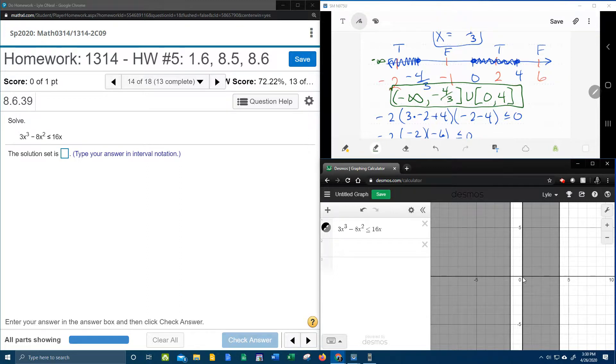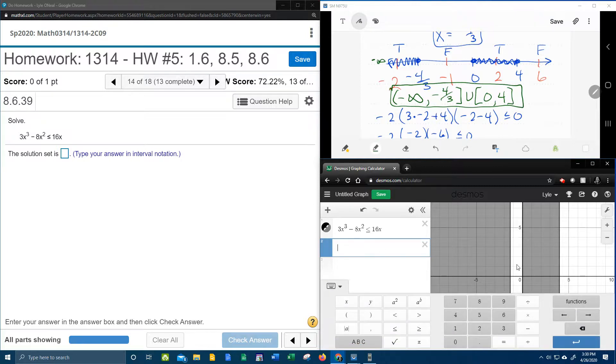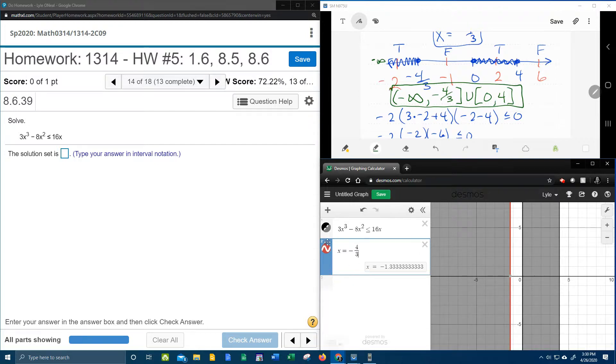I'm going to graph x equal negative 4 thirds, and then if I turn that off and on, you can see that that's right at the edge of that shading. So that number is correct, as far as that end point,